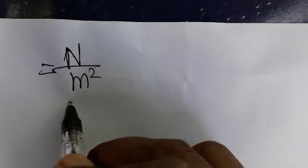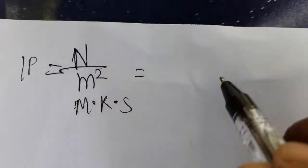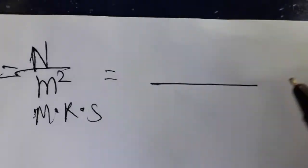Hello student, today we are going to see in MKS system for pressure unit. Pressure unit in MKS system is Newton by meter square, okay? That we are going to convert in CGS system. One Newton is dash dyne by centimeter square.